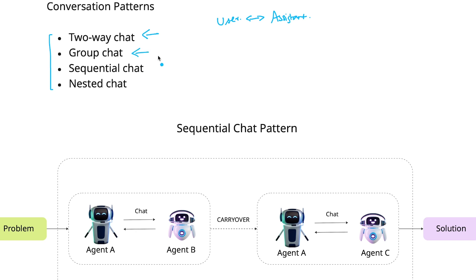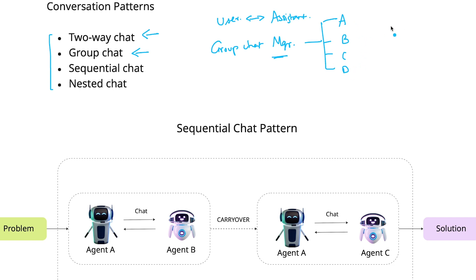The group chat involves a group chat manager which acts as an orchestrator, choosing which of the agents could be the next speaker. Choosing the next speaker has several strategies — it could be based on a round-robin fashion, random selection, or manual selection. When we implemented it, we left it to the LLM to understand the intent of our query and choose the next speaker more precisely. This is the default way of determining the next speaker.